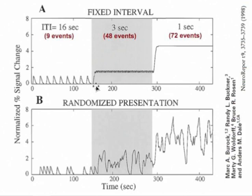By reducing the intertrial interval from 16 seconds to three seconds, the hemodynamic response doesn't have a chance to return to baseline. Whereas you could count probably 48 little bumps in this waveform, the variation between peaks and troughs is dramatically smaller for the three-second intertrial interval than for the 16-second intertrial interval. So it would be much more difficult to discriminate one event from another in that condition.